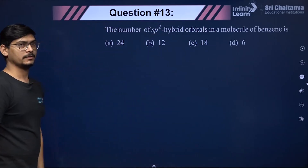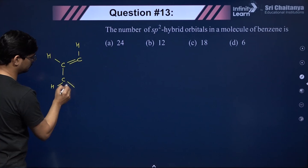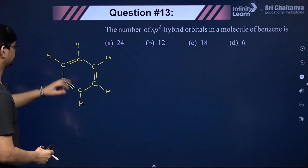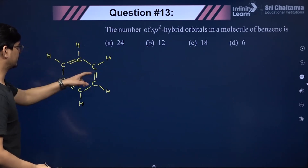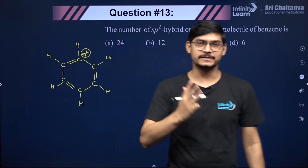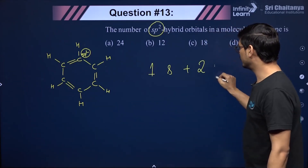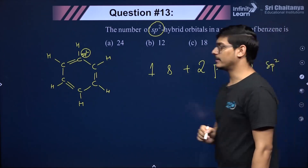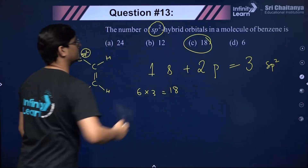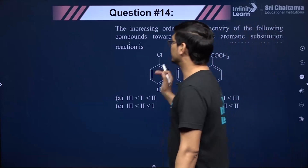For sp2 hybrid orbitals in benzene: benzene has 6 carbon atoms, each sp2 hybridized. Each sp2 atom has 3 sp2 hybrid orbitals (one s + two p orbitals combine to form three sp2 hybrids). So total sp2 hybrid orbitals = 6 × 3 = 18.